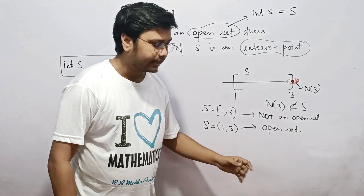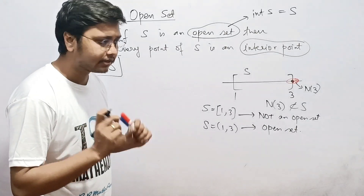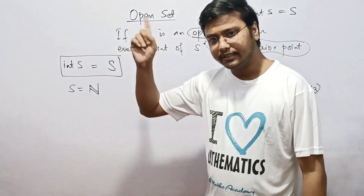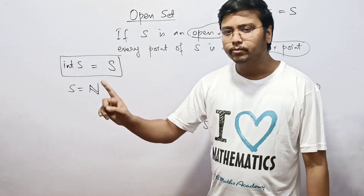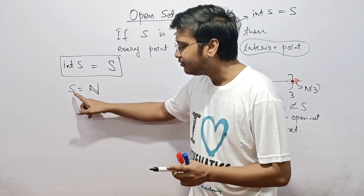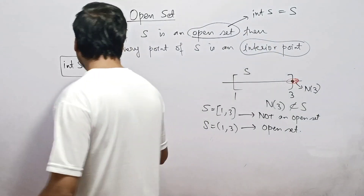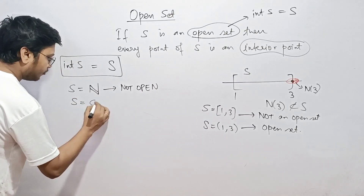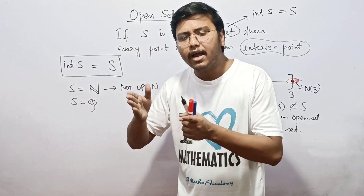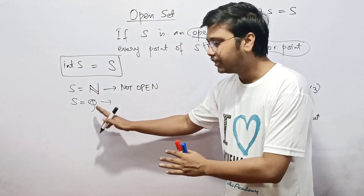Open intervals are by default open sets. Let's take a few more quick examples. If I take the set of all natural numbers, none of them are interior points, because any small neighborhood around a natural number contains infinitely many real numbers not in the set. Similarly, for the set of all rational numbers, any neighborhood around a rational number contains irrational numbers not in the set, so none of the points are interior points.